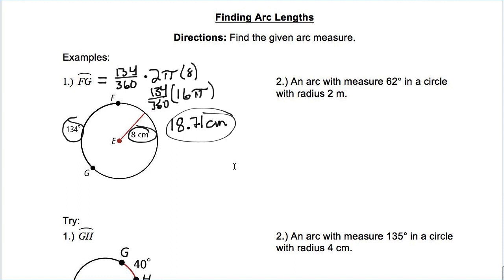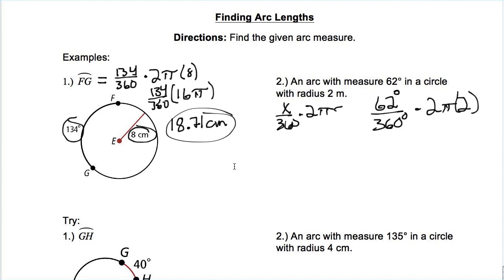Number two: they don't give us a picture, but that's okay. We know we're going to do x over 360 times 2πr. My arc measure is 62 degrees over 360, times 2π times radius 2. That's 4π. Doing 62 ÷ 360 gives approximately 0.1722, then times 4π gives an arc length of approximately 2.16 meters.